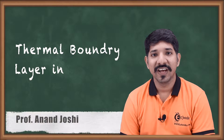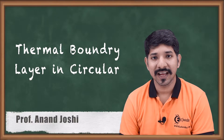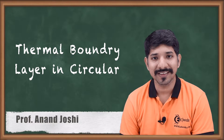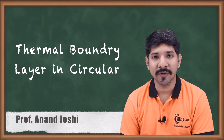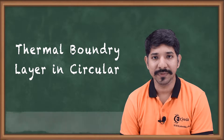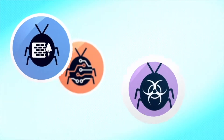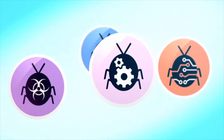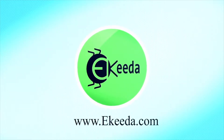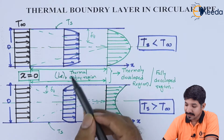Hello friends. We have seen in convection that there are velocity boundary layer and thermal boundary layer. Now let us consider the thermal boundary layer in the case of internal flow, that is, a pipe — specifically, the thermal boundary layer in a circular pipe.